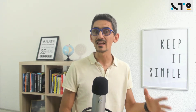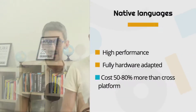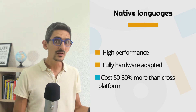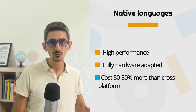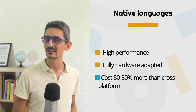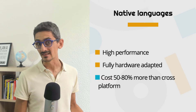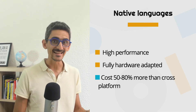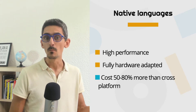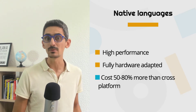When we develop in native, that means we use one of the languages recommended for each operating system. The direct results and benefits are high performance — we can use 100% of the capacity of the smartphone — and it is fully hardware-adapted, especially for Bluetooth, video performance, augmented reality, or virtual reality. Nevertheless, the big drawback of native language is that it is usually more expensive, and it can cost between 50 to 70% more than with cross-platform development.